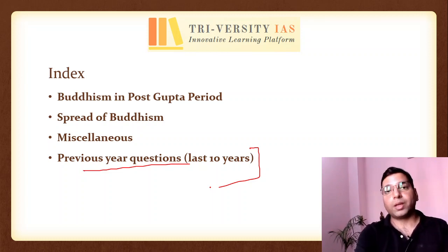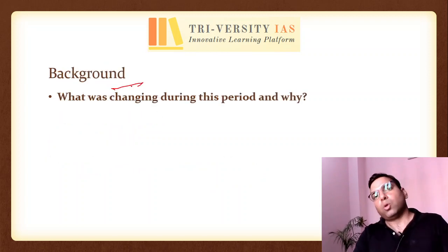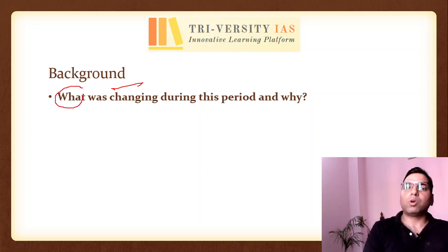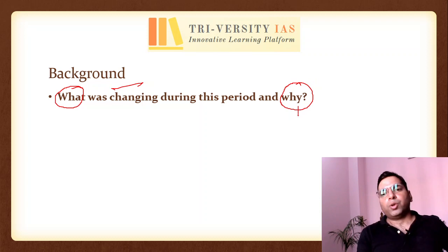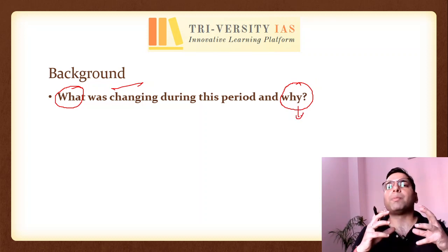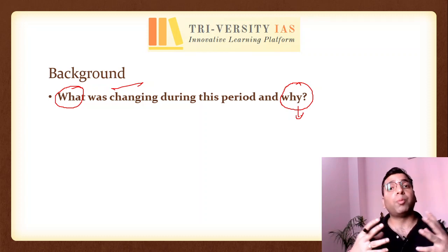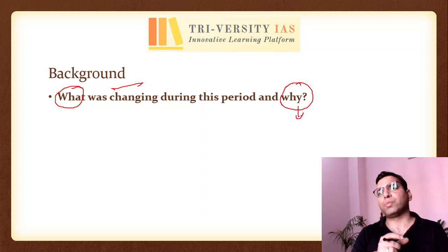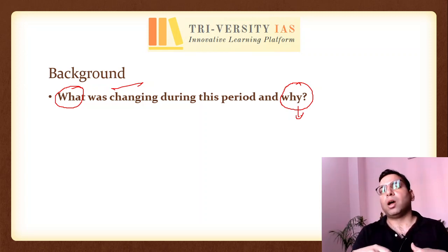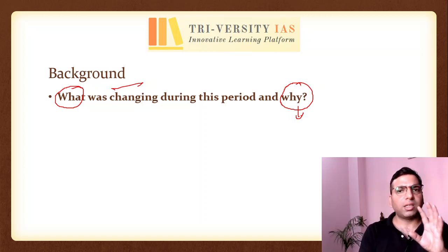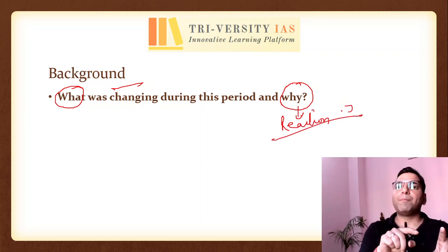Let's start with our first topic: background. I have put up two questions — what was changing, and why was the change happening? In the later Vedic period, there was Brahmanization of society. The sacrifices were becoming very costly and elaborate affairs, reserved for a few specific learned Brahmins. Therefore, there was a reaction from the society against this Brahmanization. The reaction was the development of philosophical schools and philosophical questions.